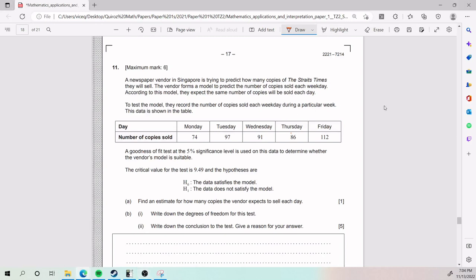Alright, so for number 11 we have that a newspaper vendor in Singapore is trying to predict how many copies of the Straits Times they will sell. The vendor forms a model to predict the number of copies sold each weekday, and according to this model they expect the same number of copies will be sold each day. To test the model they record the number of copies sold each day during a particular week. The data is shown in the table. This is the actual data that was gathered, not what is expected.